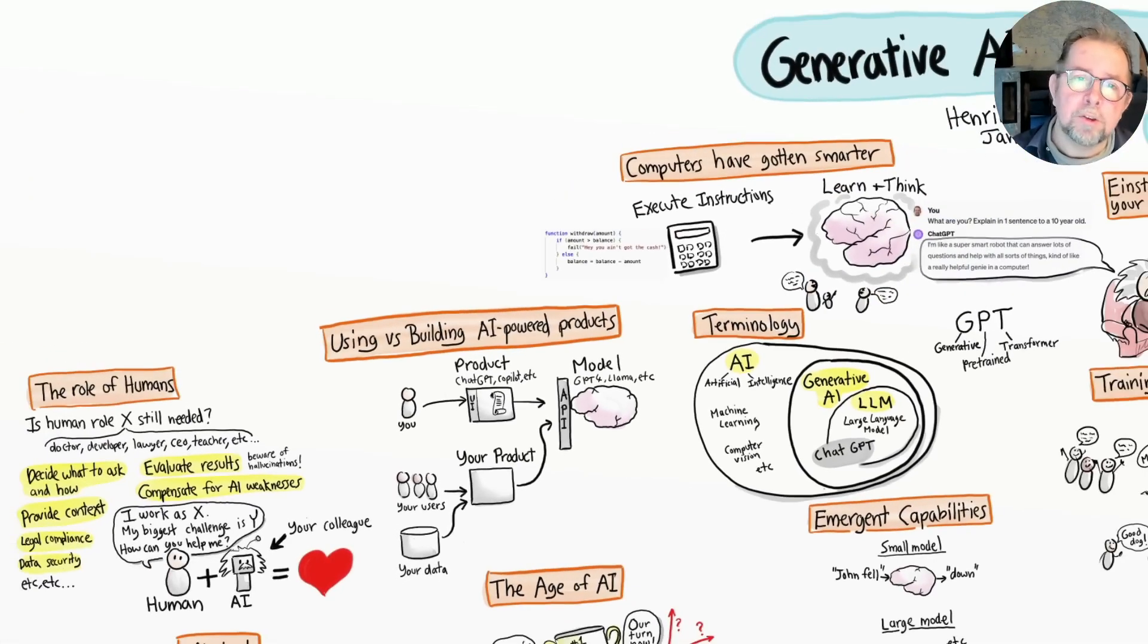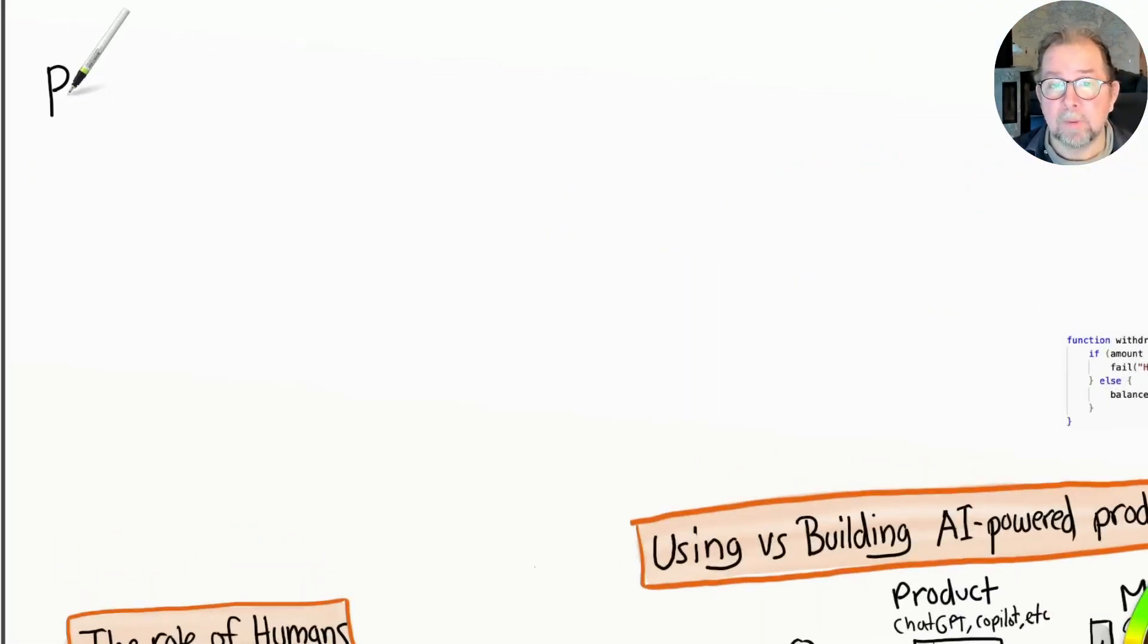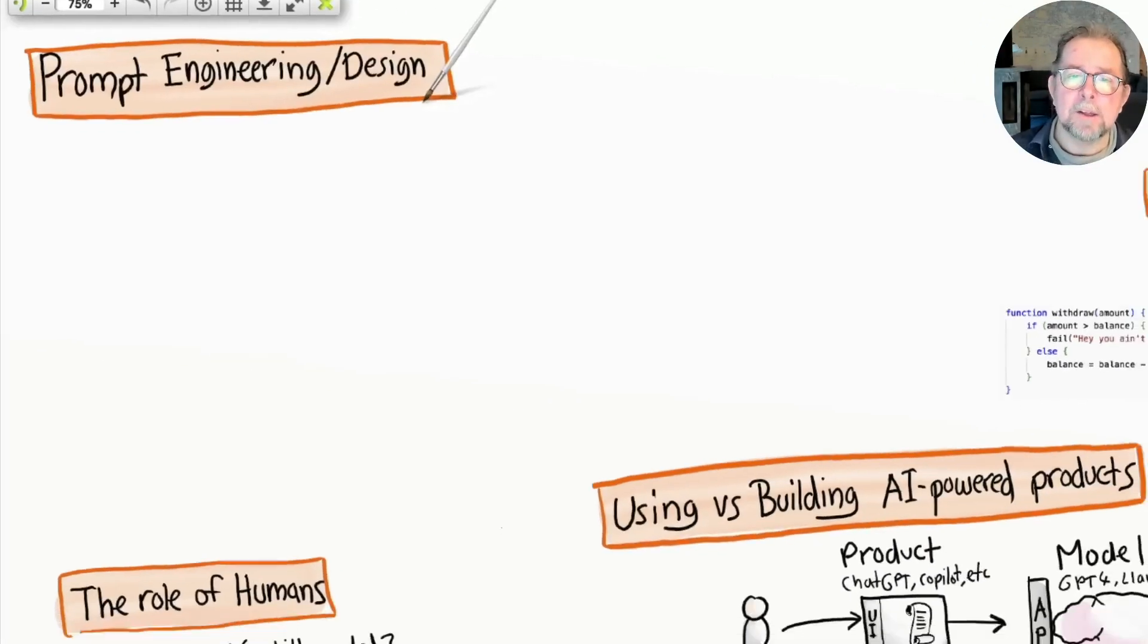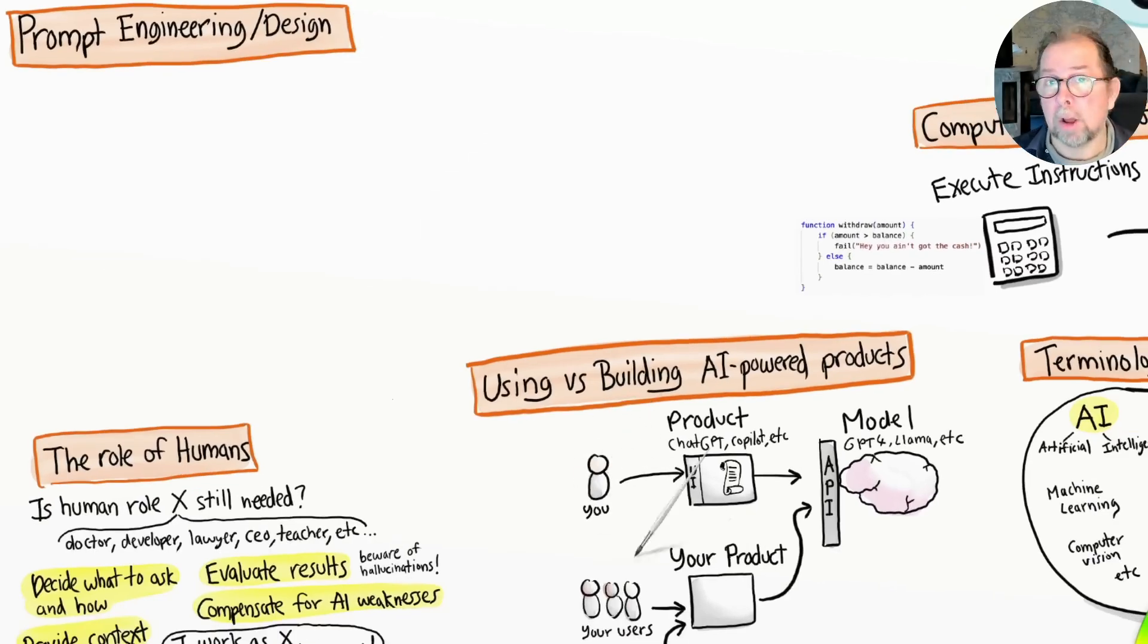In order to use generative AI effectively, you need to get good at prompt engineering, or prompt design as I prefer to call it. This skill is needed both as a user and as a product developer, because in both cases you need to be able to craft effective prompts that produce useful results from an AI model.